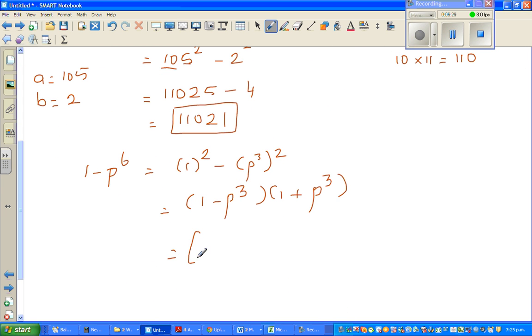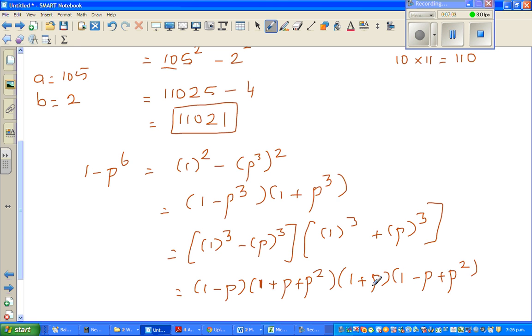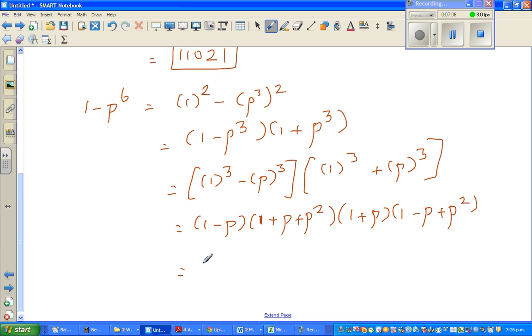In a big bracket, I can write this is 1 cubed minus p cubed, and this bracket I can write 1 cubed plus p cubed. Using that formula, this is 1 minus p times 1 squared is 1, and then with plus here, 1 times p is p plus p squared. This factorizes to 1 plus p times 1 minus p plus p squared. Writing in a better way, this is 1 minus p times 1 plus p times 1 plus p plus p squared and 1 minus p plus p squared.